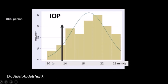Suppose we measure the intraocular pressure for a group of persons, record the IOP and the frequency of persons with that IOP, and we have this curve. What is the probability of having persons with IOP below 13 mmHg? We calculate the persons in that area divided by the total persons in the whole graph.